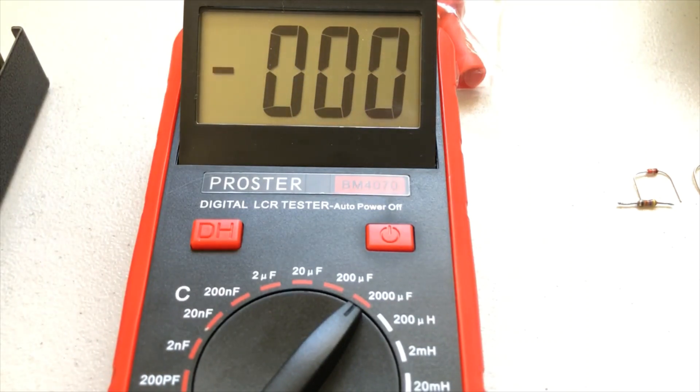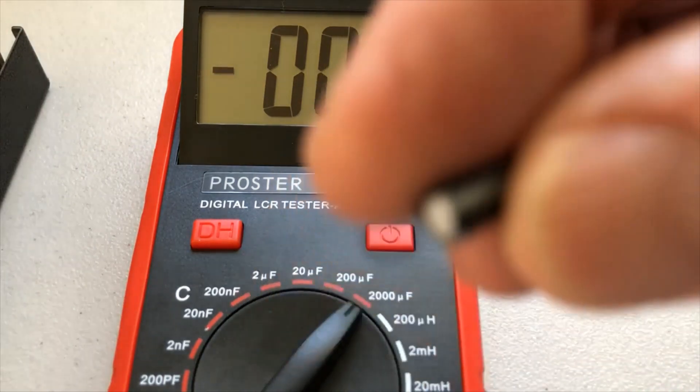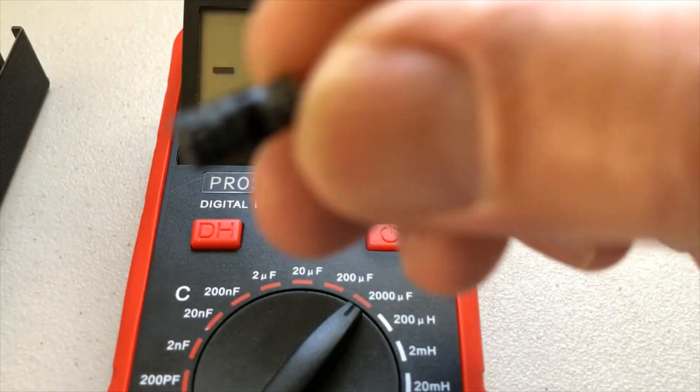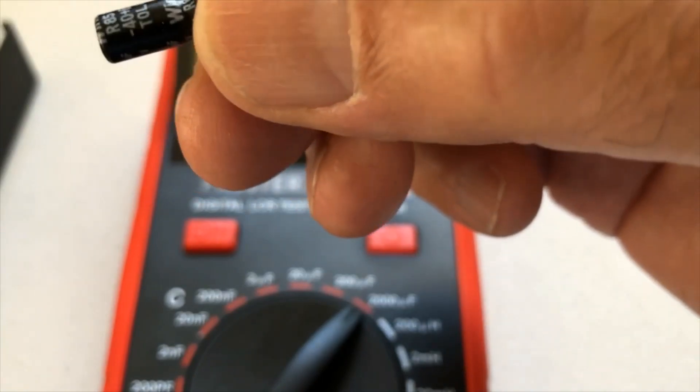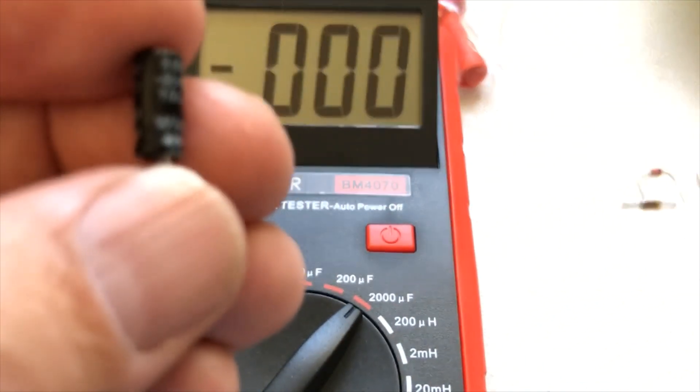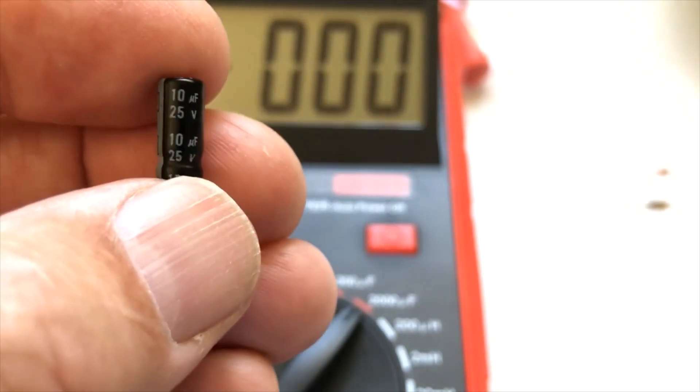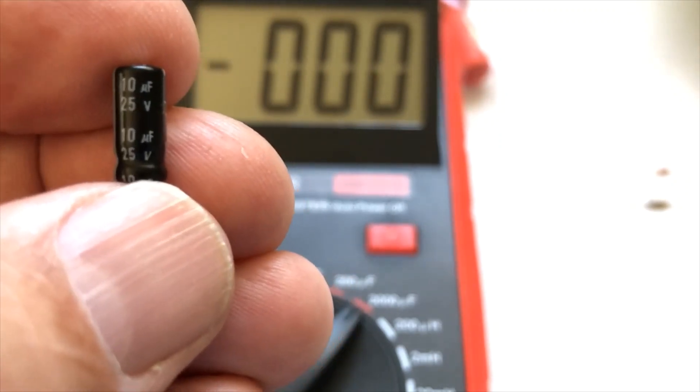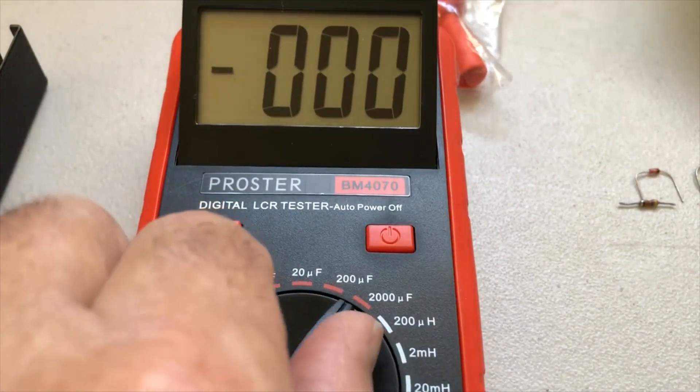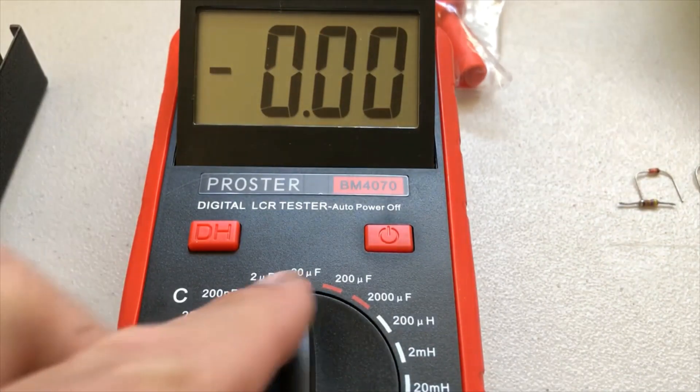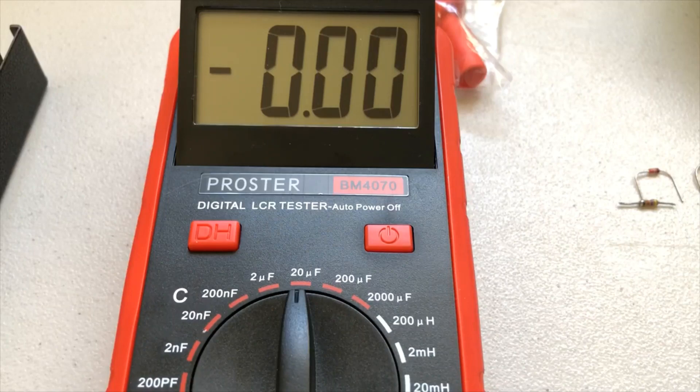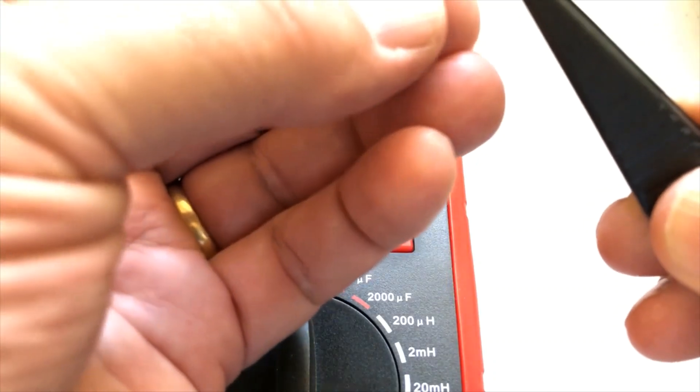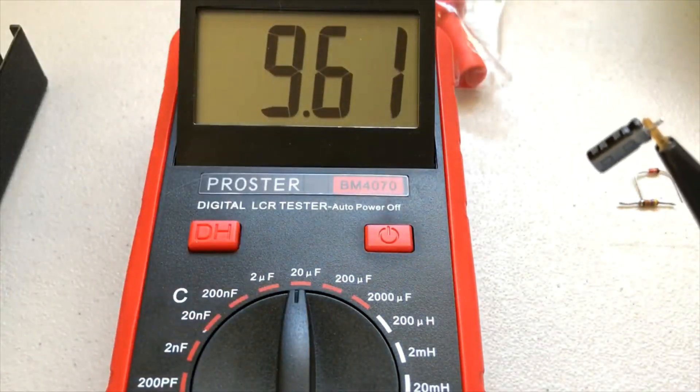Alright, we've got two smaller ones here. This one is 10 farads. So let's go ahead and go to our meter here. We're going to have to set it to fall between 2 and 20, so we'll put it on 20. Then we'll line up the negative again, put it in here, and we get a reading of 9.6. It's totally acceptable.